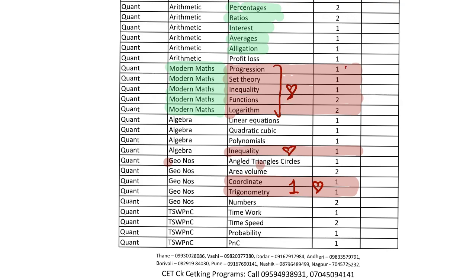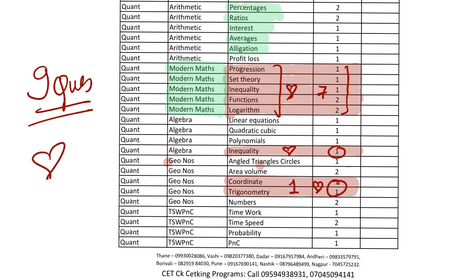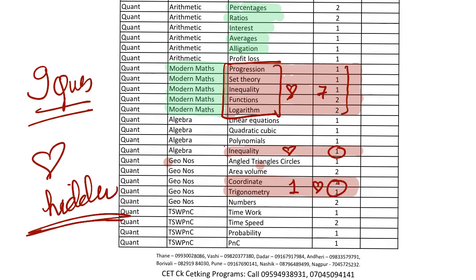So that's 1+1+1+2+2 = 7 marks, plus one more makes 8, plus one more makes 9. Nine questions in the CAT paper are hidden gems which you have to identify and solve. Fortunately, we have shortcut strategies for all these topics.